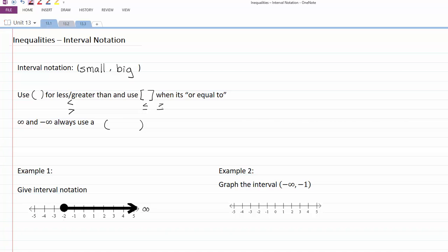Whenever we have infinity and negative infinity, we always use parentheses. We could go from negative infinity to positive infinity.